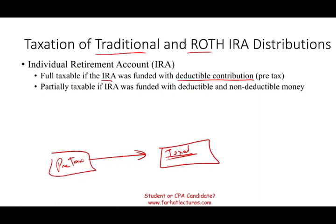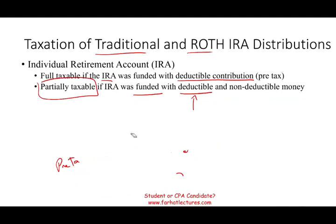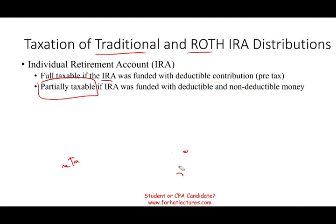If the IRA was funded with both deductible and non-deductible amounts — so some of the money was already taxable and some of it was not — then the distribution is going to be partially taxable. Some of the distribution will be taxable and some of it will not. This is where the complexity comes: when the amount is fully deductible, the full amount is taxable — that's easy. But when it's not, you have to determine first the tax basis for the IRA.